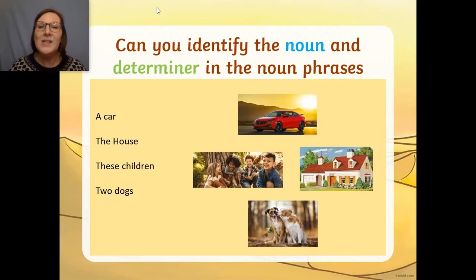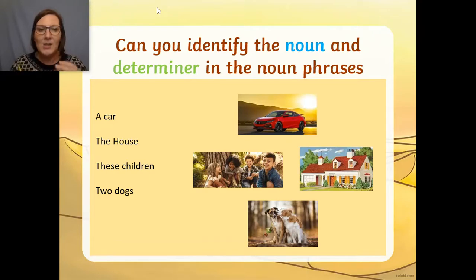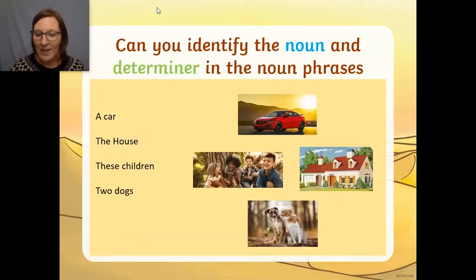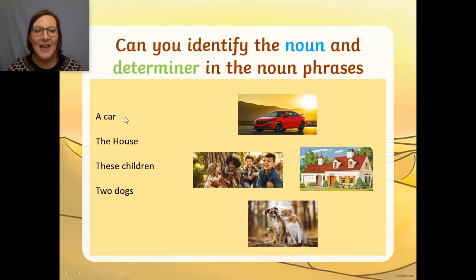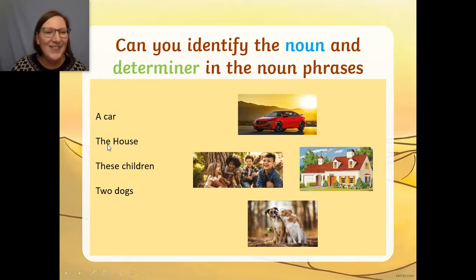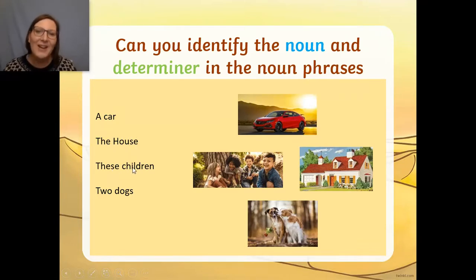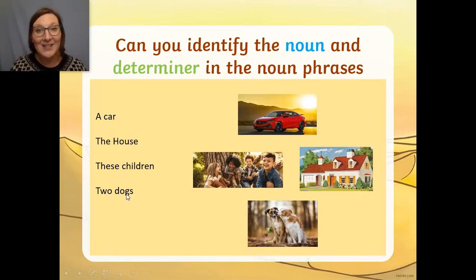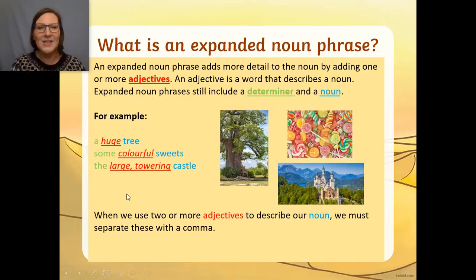So, can you identify the noun and the determiner in these noun phrases? You have this on your worksheet, so pause the video here and see if you can identify them. Okay, welcome back! Did you do that? Let's see. So in the first one, 'a' is the determiner, 'car' is the noun. 'That' is the determiner, 'house' is the noun. 'These' is the determiner, 'children' is the noun. 'Two' is the determiner, 'dogs' is the noun. Did you get those? Fantastic — you're smashing it today. Well done!